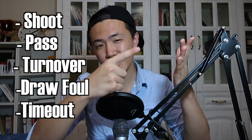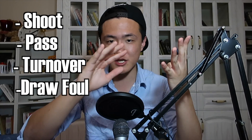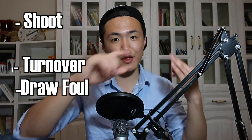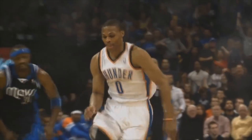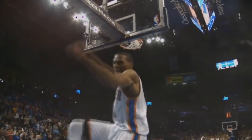Let me explain this in an easier way. When you have the ball in your hands, there are only four things you can really do with it: you can shoot it, you can pass it, you can turn it over, or you can draw a foul. Technically your team can also call a timeout, but that's statistically insignificant. What usage rate does is it takes the three outcomes that end the possession and takes those into consideration. So now that we have a correct understanding of what usage rate is, let's see how it helps us understand some basketball concepts.